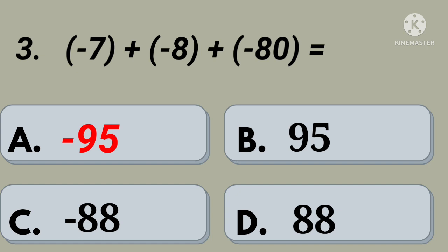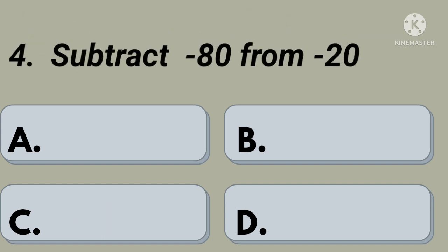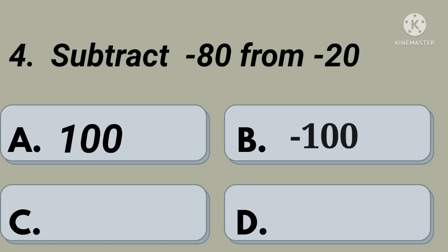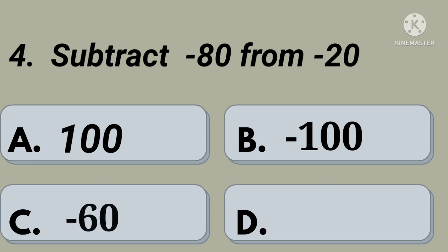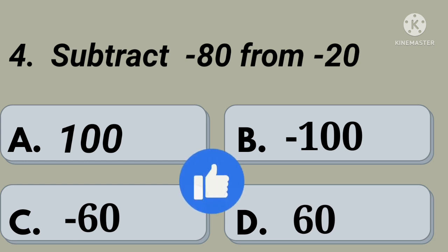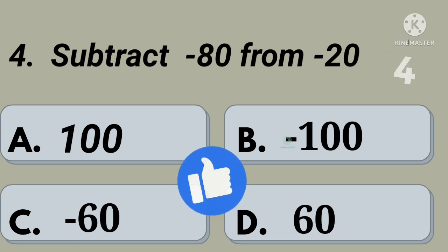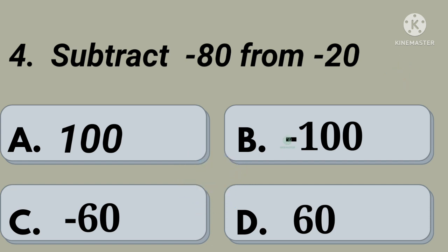Fourth question: subtract minus 80 from minus 20. Option A: 100, option B: minus 100, option C: minus 60, option D: 60. Your time starts now. Right, option D: 60.